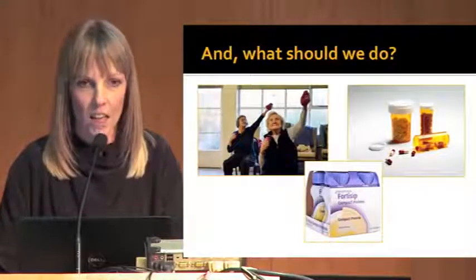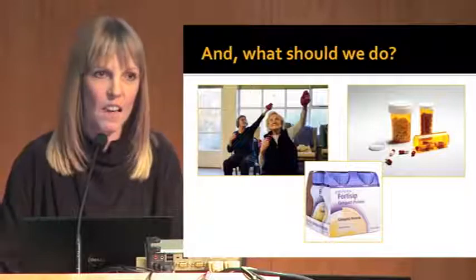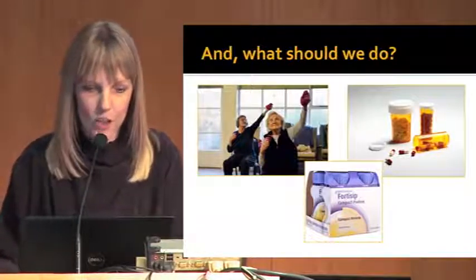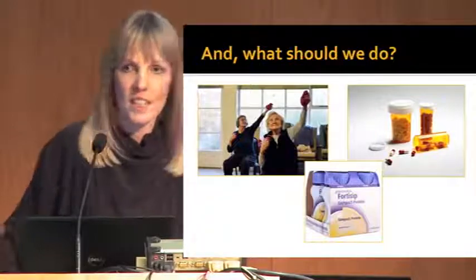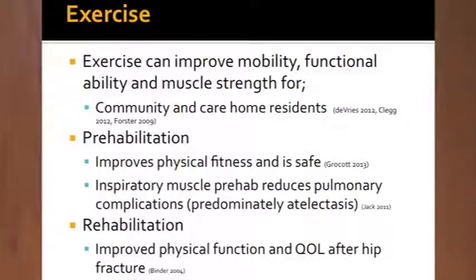If we are going to intervene at any point in that pathway, what will we actually do? We don't have a frailty drug or a specific frailty treatment. Broadly, the literature on modifying the frailty syndrome falls into three areas: exercise, pharmacology, and nutrition. We know that in frail community-dwelling patients and frail care home residents, exercise can improve mobility, functional ability, and muscle strength even in a very frail group - so there's some evidence that this is sensible, and it's certainly intuitive when you look at the components of the frailty syndrome.